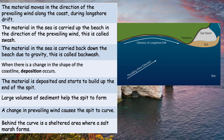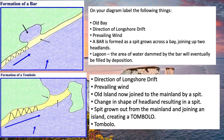When there is a change in the shape of the coastline, deposition occurs — deposition literally just means the dropping of sediment. The material is deposited and starts to build up at the end of the spit, forming that spit at this area. Large volumes of sediment help the spit to form — it does take a very long time. A change in prevailing wind causes the spit to curve. Usually behind the spit there's a sheltered area where a salt marsh forms. Hopefully you've got those in a similar order — if not, go back and correct your answer.